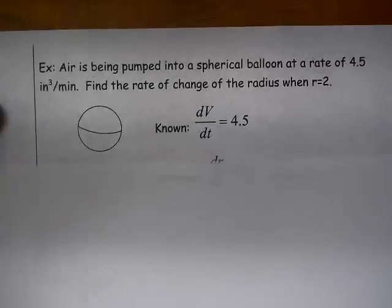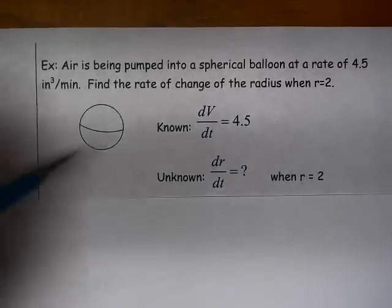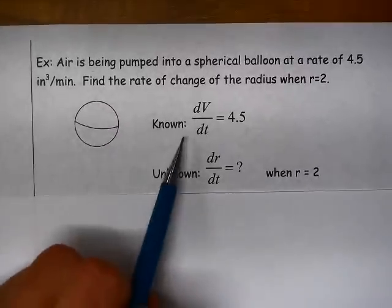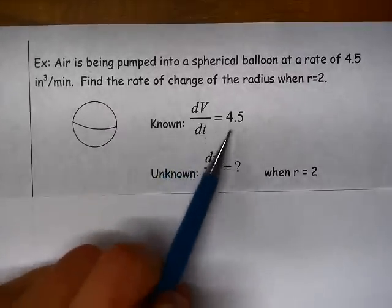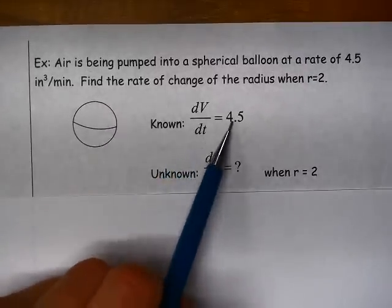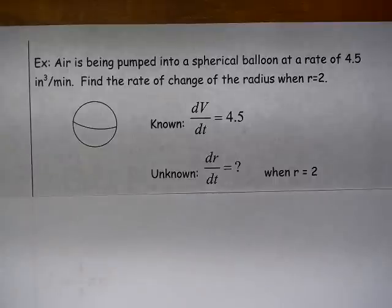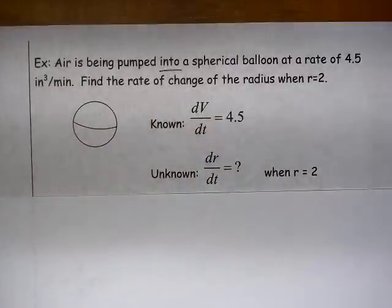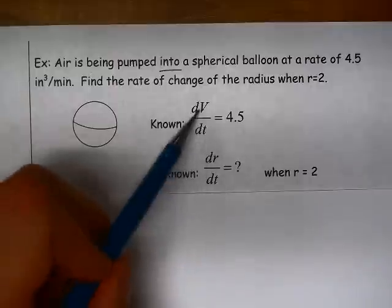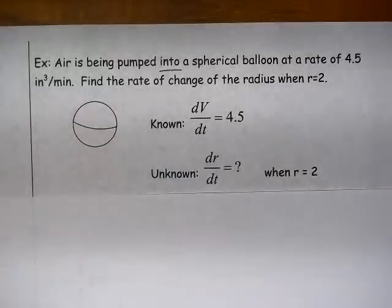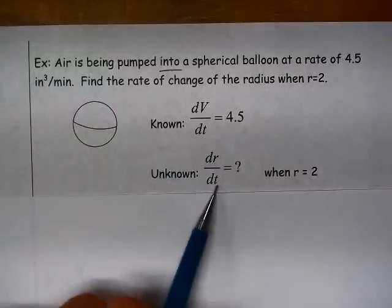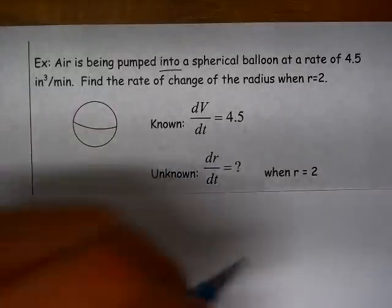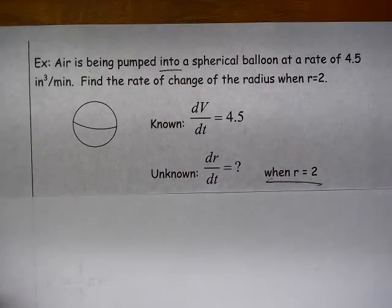So we have our knowns and unknowns. So we make a sketch. Our known is that the volume is changing at 4.5 cubic inches per minute, and the volume is increasing. So the air is being pumped into the balloon. So the volume is increasing, so the rate of change of the volume is positive. We're trying to find dr/dt, and we are trying to do that at the instant when r is equal to 2.